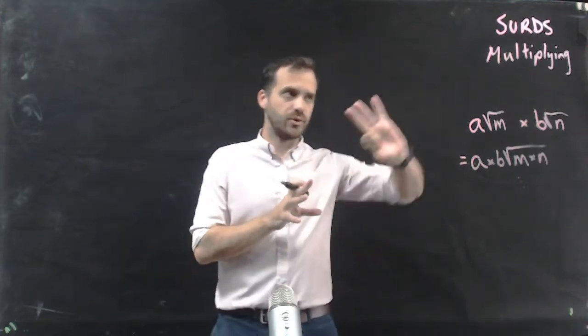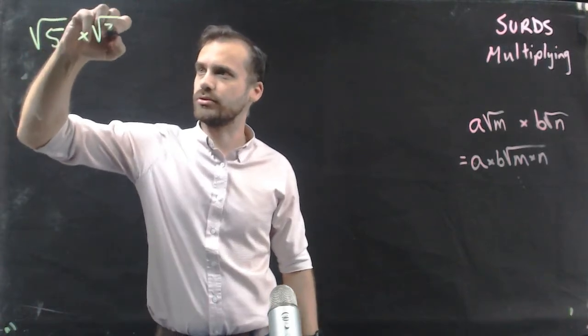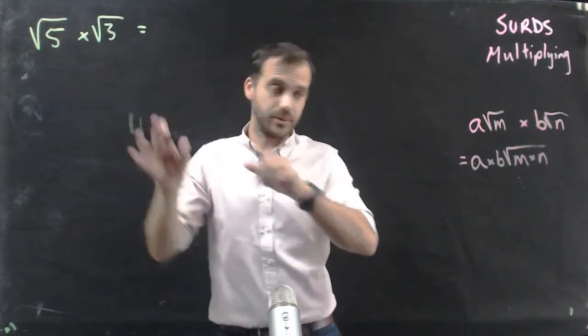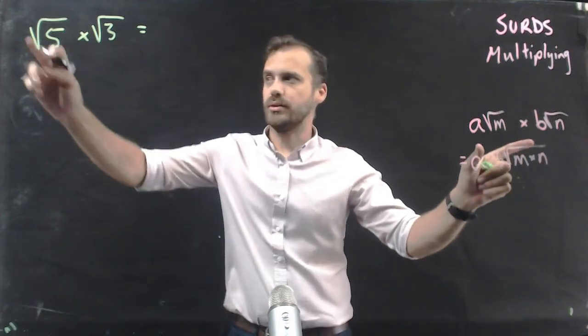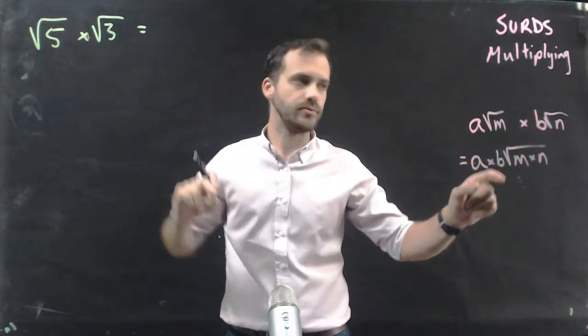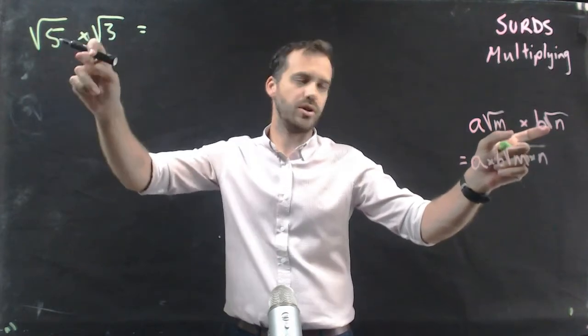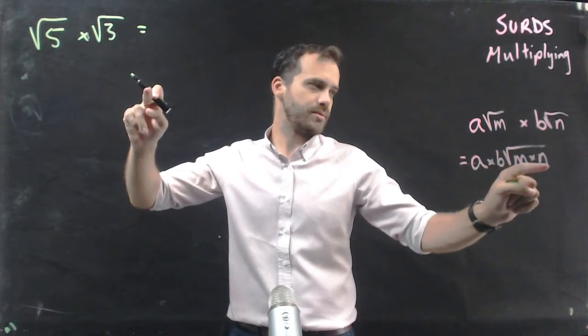The simplest straightforward example is root 5 times root 3. In this example, there's no a and there's no b, or more accurately a and b are 1. There's an m and an n though, and when you're dealing with the root of m times the root of n, it's the root of m times n.